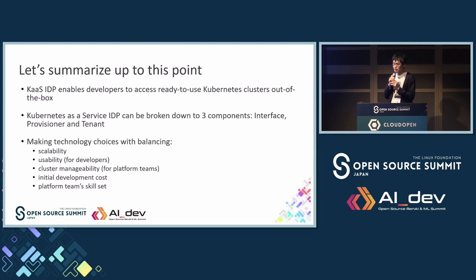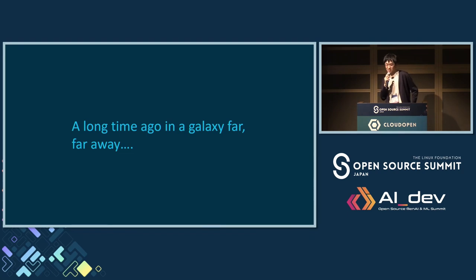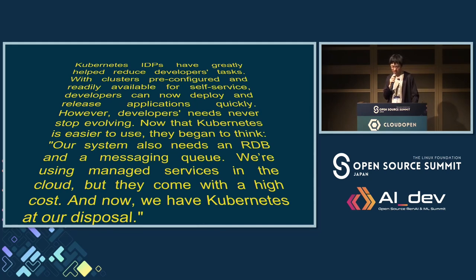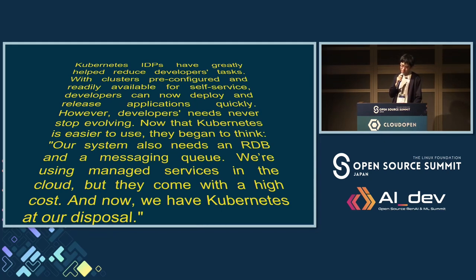So let's move on to the X-as-a-service — for example, database as a service. I'd like to tell you another story — a long time ago in a galaxy far, far away. Kubernetes IDPs have greatly helped reduce developers' tasks, with clusters configured and readily available for self-service. Developers can now deploy and release applications quickly. However, developers never stop evolving. Now that Kubernetes is easier to use, they began to think: our system also needs an RDB and a messaging queue. We are using managed services in the cloud, but they come with a high cost. And now, we have Kubernetes at our disposal.